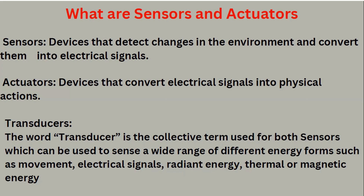Next, let's come to actuators. An actuator is a device that converts an electrical signal into physical actions. For example, a motor — when you press a button or when current is passed, it will rotate and give you physical action. Likewise, motors, relays, and many other things which convert electrical signals into physical action, we call them actuators.